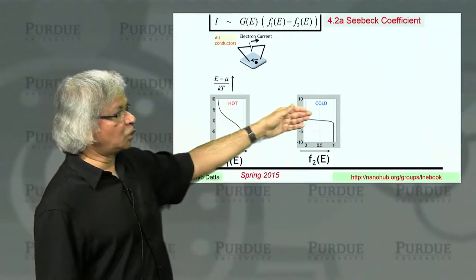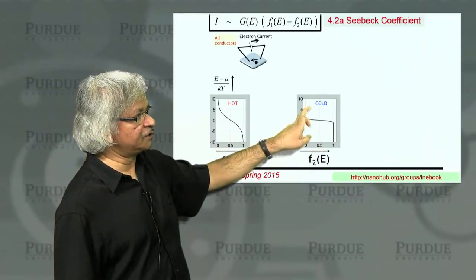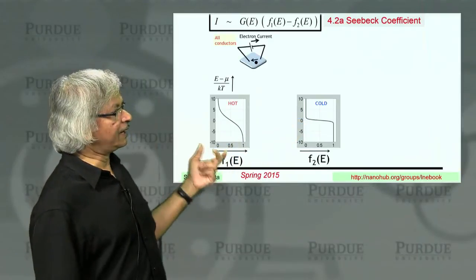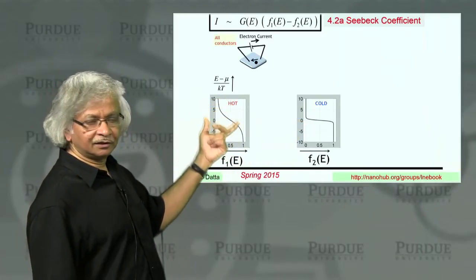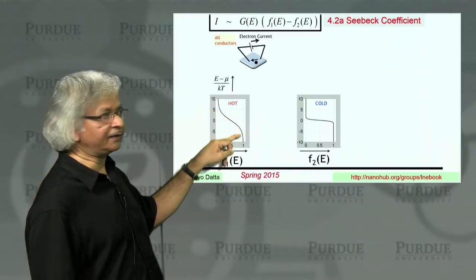So if you had a cold side, then the Fermi function would look kind of abrupt. It would change from 0 to 1 relatively sharply. Whereas, if the contact is hot, then the change would be more gradual, looking something like this.